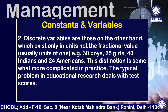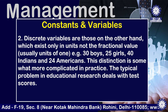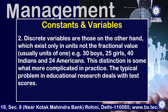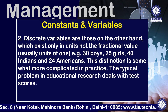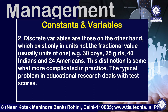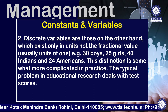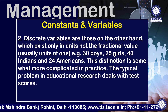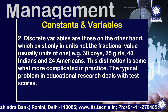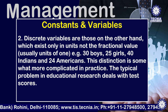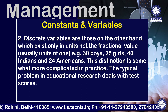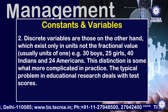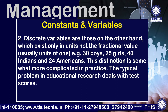Discrete variables, on the other hand, are those which exist only in whole units, not fractional values — usually units of one. Examples include 30 boys, 25 girls, 40 Indians, and 24 Americans.